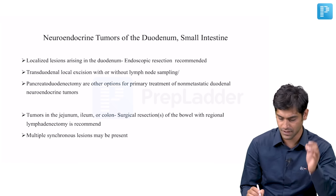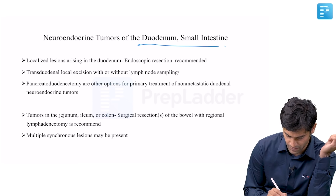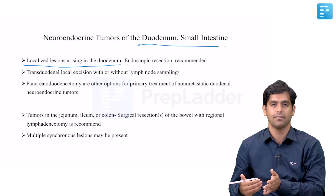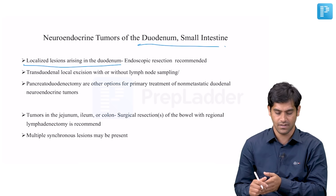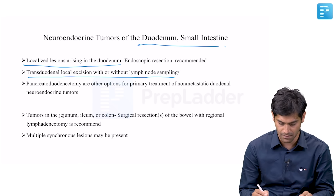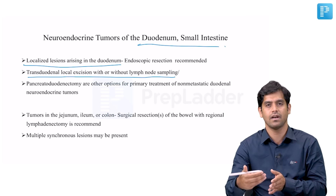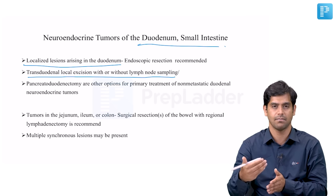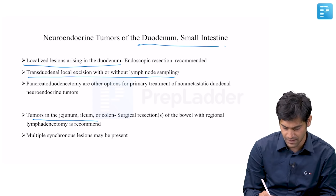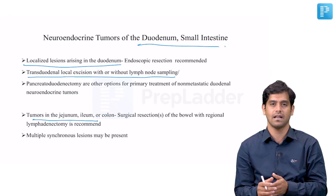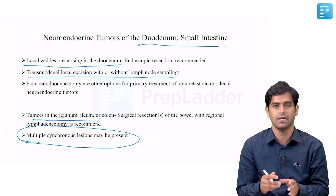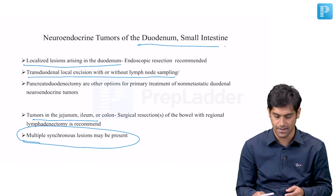Neuroendocrine tumors of the duodenum and small intestine: For lesions in the duodenum, resection is not easy, so enucleation or endoscopic resection is tried as far as possible. Transduodenal excision with lymph node sampling is also a possibility. However, if the tumor is large and in the periampullary region with associated lymph nodes, the chance of malignancy is pretty high, and a pancreaticoduodenectomy (Whipple) is planned. For tumors in the jejunum, ileum, or colon, a segmental resection can be done. Multiple synchronous lesions can be present in approximately 20 percent of patients.